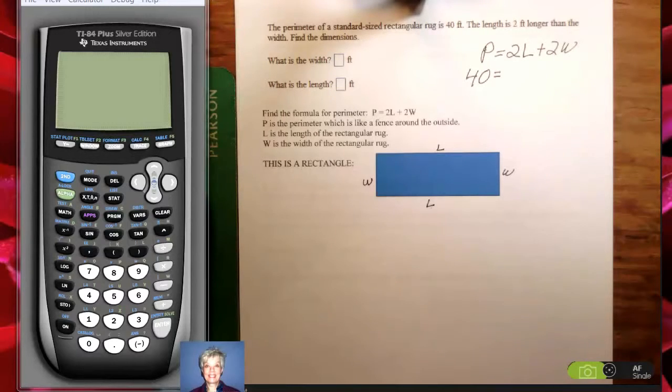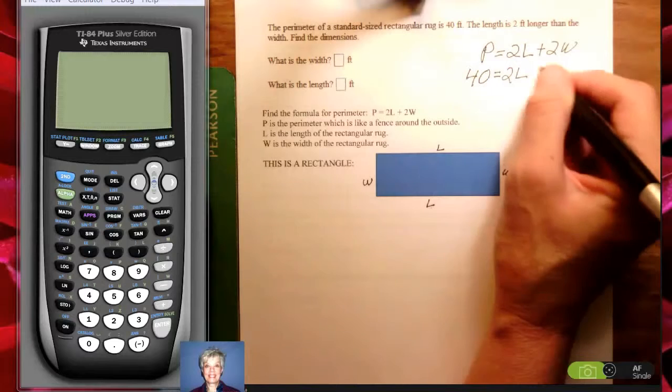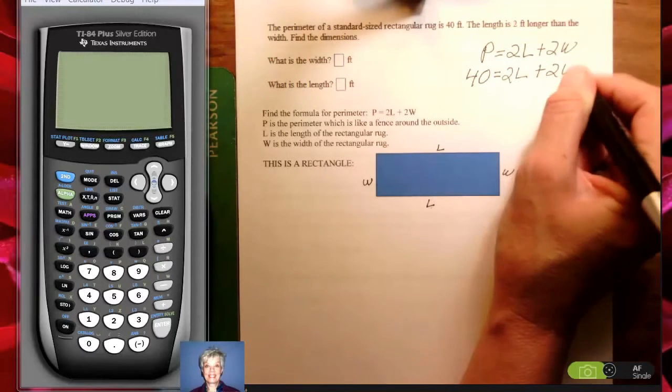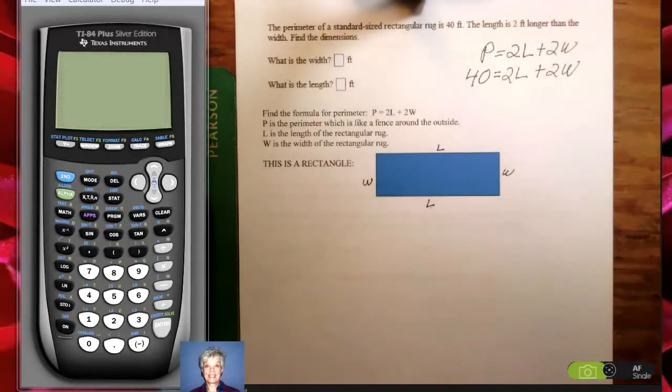There's a trick to that and the trick is this. We have to convert this equation that now has two letters in it, two variables, an L and a W. We have to convert that so that it only has one letter in it. Then we can solve it.